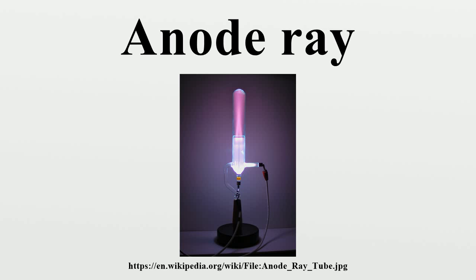Goldstein used a gas discharge tube which had a perforated cathode. When a high electrical potential of several thousand volts is applied between the cathode and anode, faint luminous rays are seen extending from the holes in the back of the cathode. These rays are beams of particles moving in a direction opposite to the cathode rays.